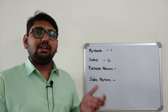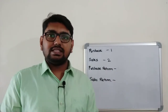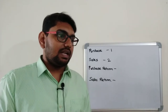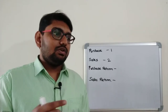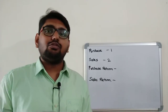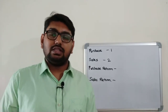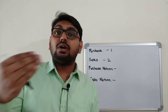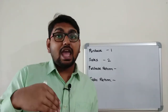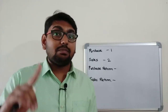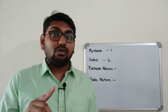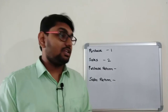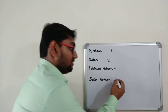Moving on to the third transaction: goods returned by Fiona worth rupees 3,000. Fiona has returned goods to us, which means I had sold goods to Fiona in the past, so this is a sales return transaction. The third transaction is therefore a sales return transaction.